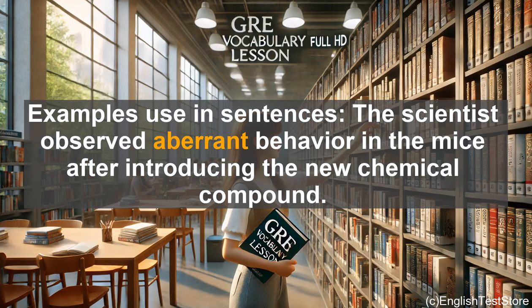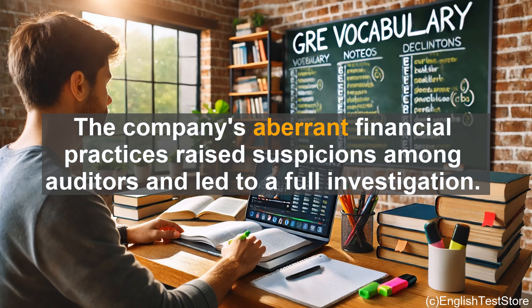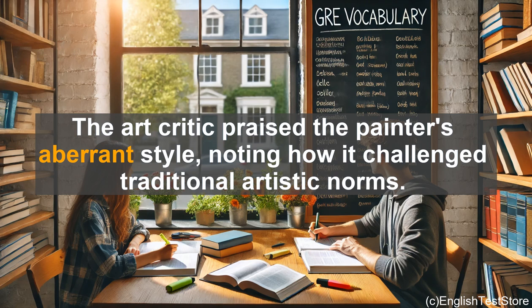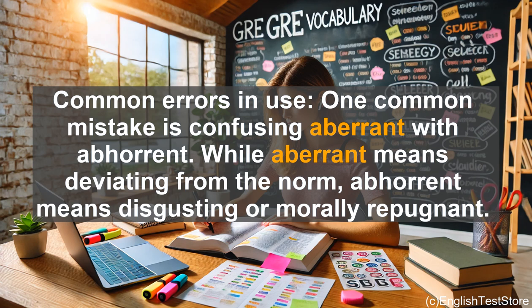Examples used in sentences: the scientist observed aberrant behavior in the mice after introducing the new chemical compound. The company's aberrant financial practices raised suspicions among auditors and led to a full investigation. Sarah's aberrant sleep patterns — often staying awake all night and sleeping during the day — concerned her family. The art critic praised the painter's aberrant style, noting how it challenged traditional artistic norms.